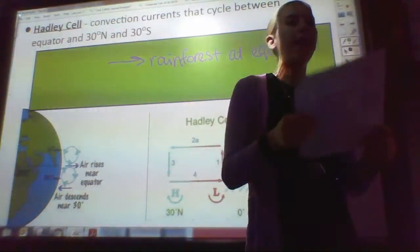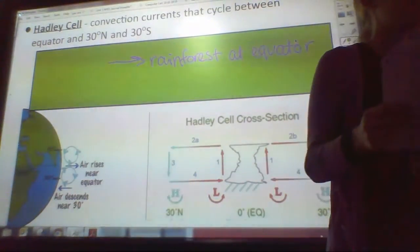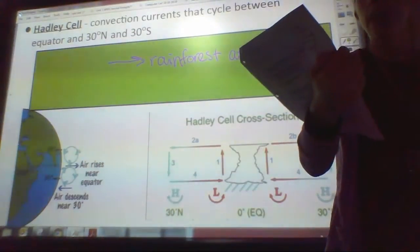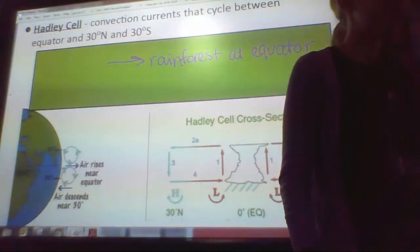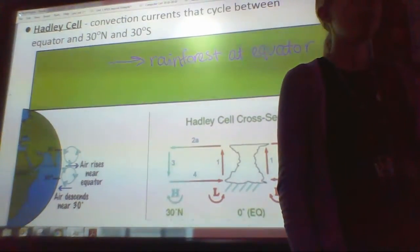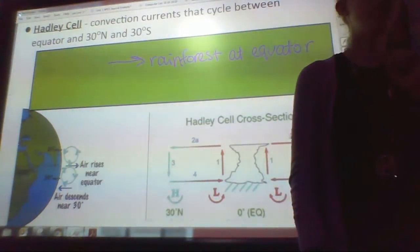All right, here's the first one, a Hadley cell. This is named after a guy. You have this written down already. So a Hadley cell happens between 30 degrees north and 30 degrees south. And this is the reason why we have deserts at 30 degrees north and south, and we have rainforests at the equator. Let me show you what happens and then you can write this down.